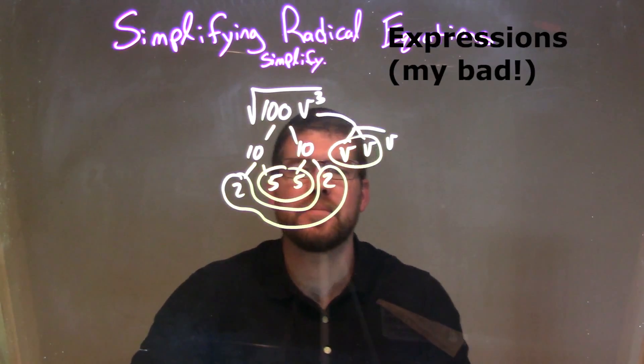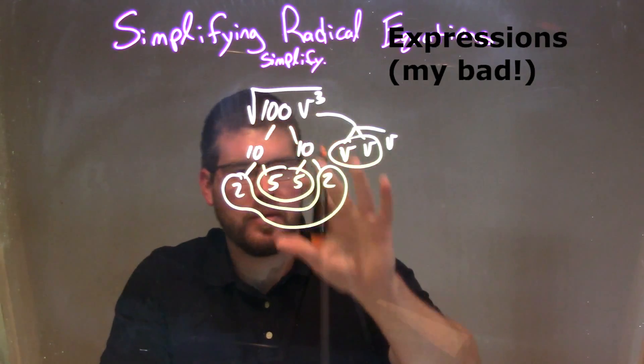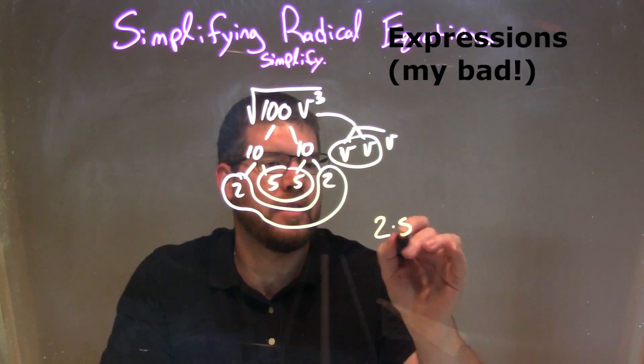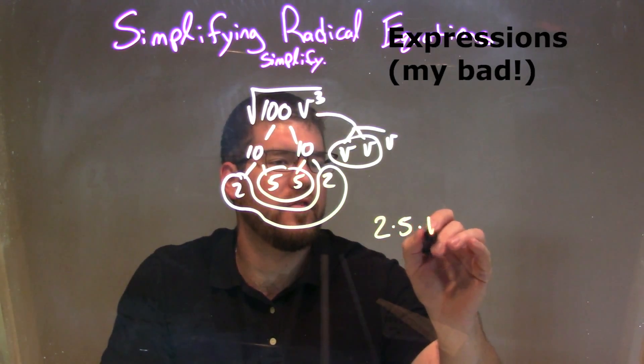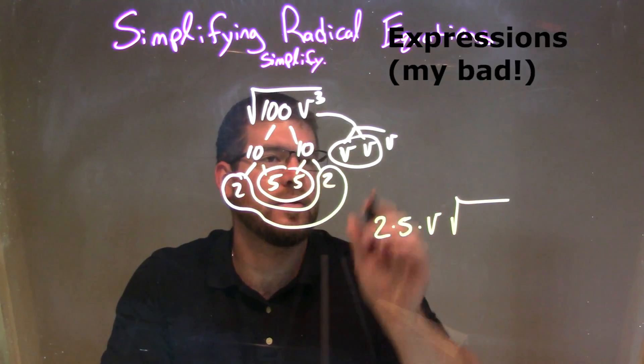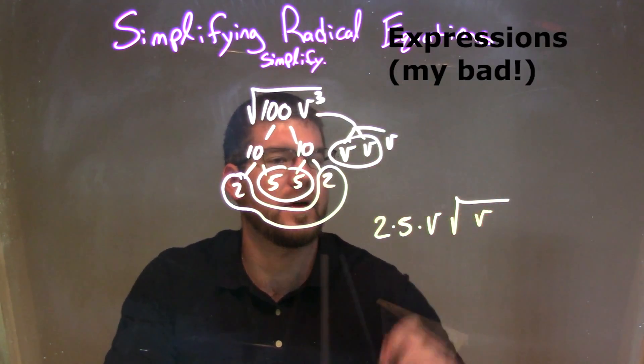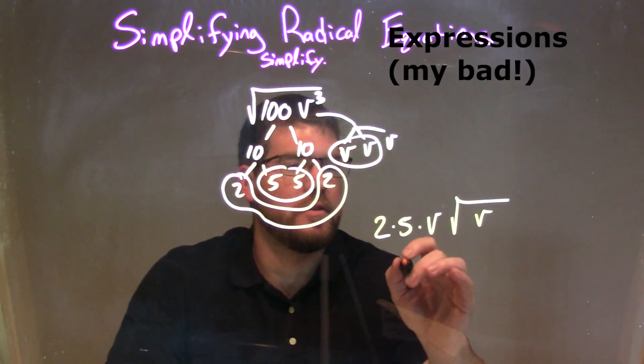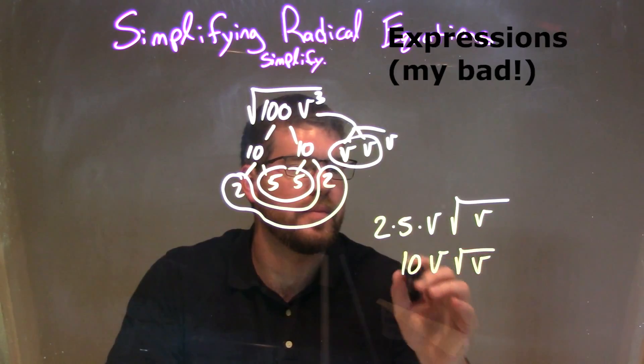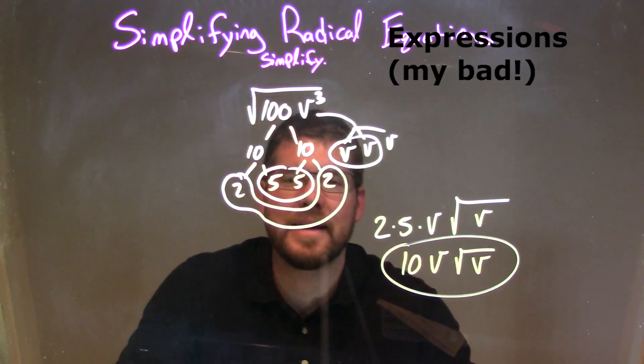So when I break this down and simplify, okay? I simplify out my pairs. A pair of 2 on the outside of the square root. A pair of 5 on the outside, so we put one down, and a pair of v on the outside. Then we have the square root here. The only single left is a v, okay? So now we simplify 2 times 5 is 10. So we have 10v times the square root of v, and that is our final simplified answer.